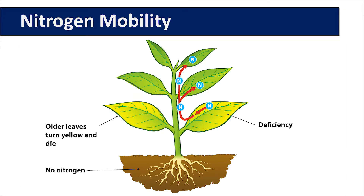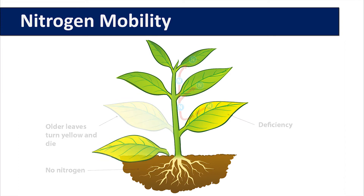Once this happens, the older leaves will turn yellow, and if the nitrogen deficiency symptom isn't corrected — either with fertilizer or management of the root system — the leaves will fall off.